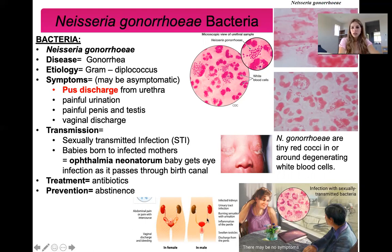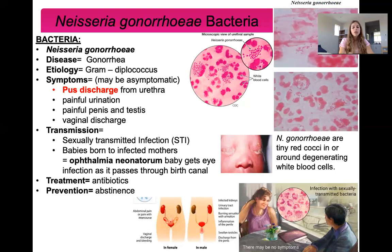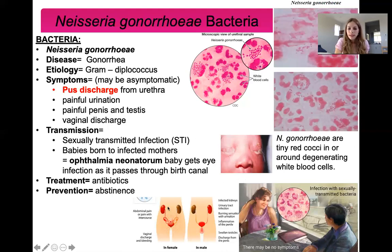This disease is transmitted sexually. Babies born to infected mothers can also develop ophthalmia neonatorum — a very serious eye infection that can cause many complications. Treatment, whether for the baby or for the sexually transmitted infection, is antibiotics. Everyone who may have had sexual contact with an infected person needs antibiotics. Prevention is essentially abstinence; there is currently no vaccine for gonorrhea. Here are images showing infection in female and male patients, and this is a very prominent sexually transmitted infection.